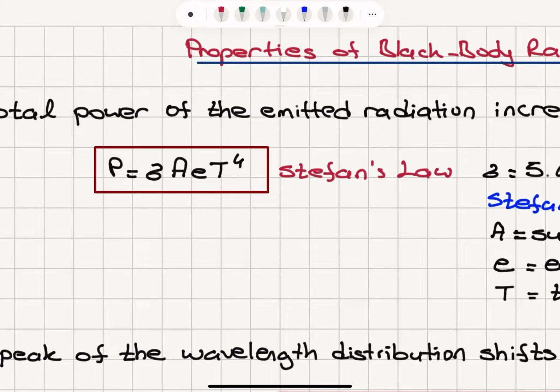Emissivity, remember, is the ratio of absorbed radiation to incident radiation. Because a black body absorbs all the radiation incident on it, emissivity is 1 for a black body, an ideal black body.